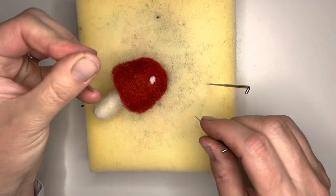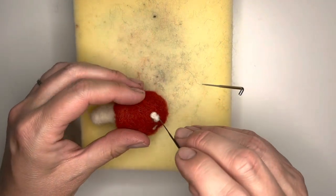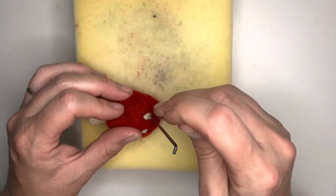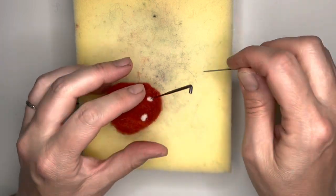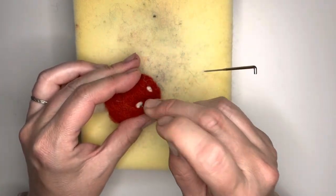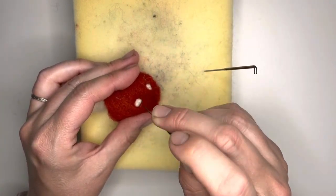So adding our little dots so you can make them different colors, you can make them different sizes, anything that you like. So just keep rotating around, adding spots where you think they need to be.